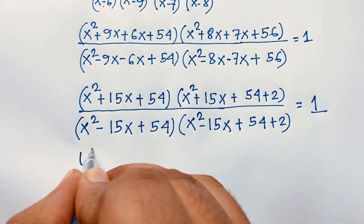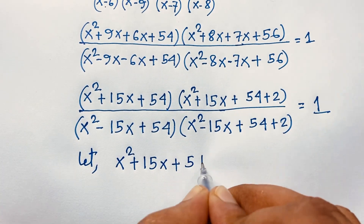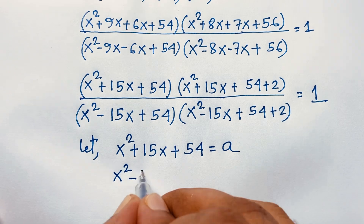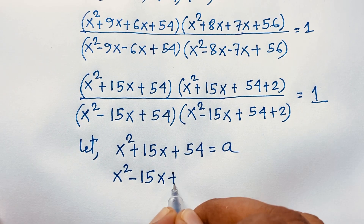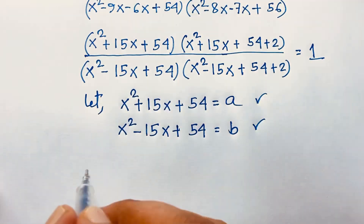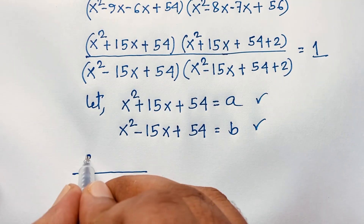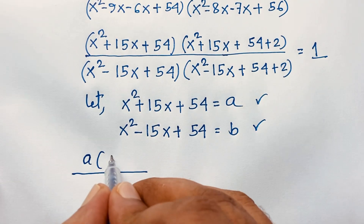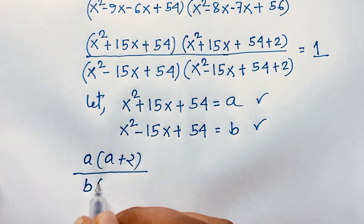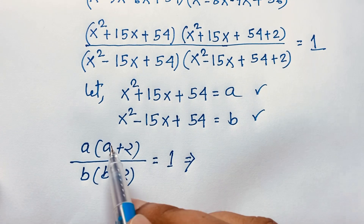Let a = x² + 15x + 54, and b = x² - 15x + 54. Then the equation becomes a(a+2) × b(b+2) = 1, which means a(a+2) times b(b+2) equals 1.